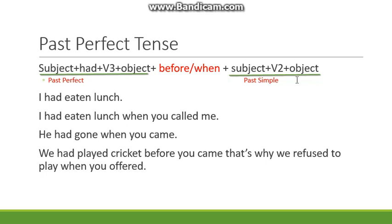The condition for past perfect is: before or when, plus past simple. For example: 'I had eaten lunch when you called me' — this makes sense. 'He had gone when you came.' 'When' is a conjunction which connects both sentences. 'He had gone' is past perfect; 'you came' is past simple. The formula for past simple is subject plus second form of verb plus object.